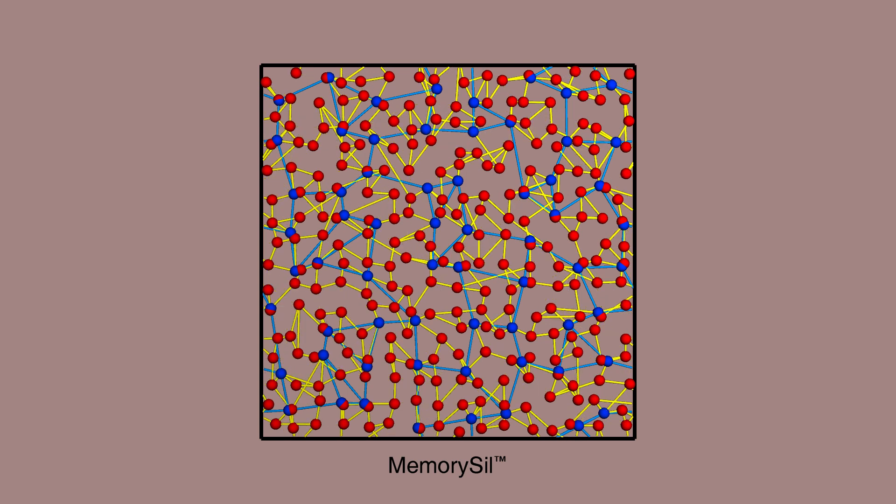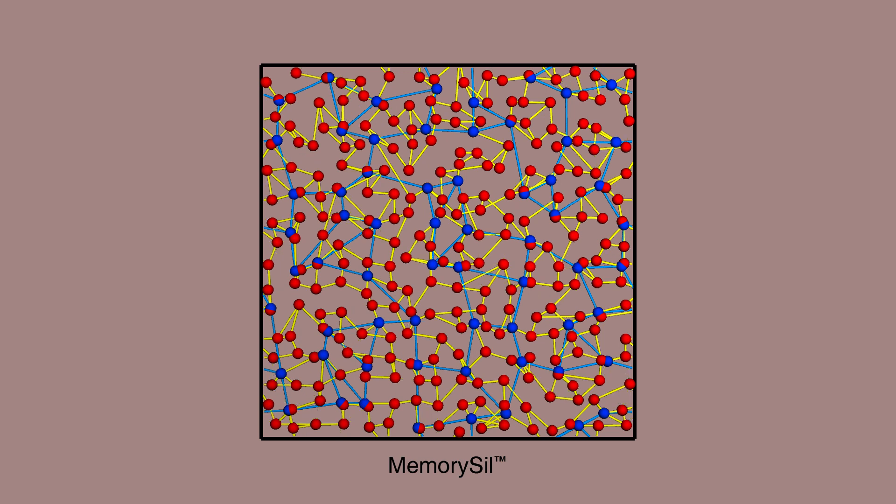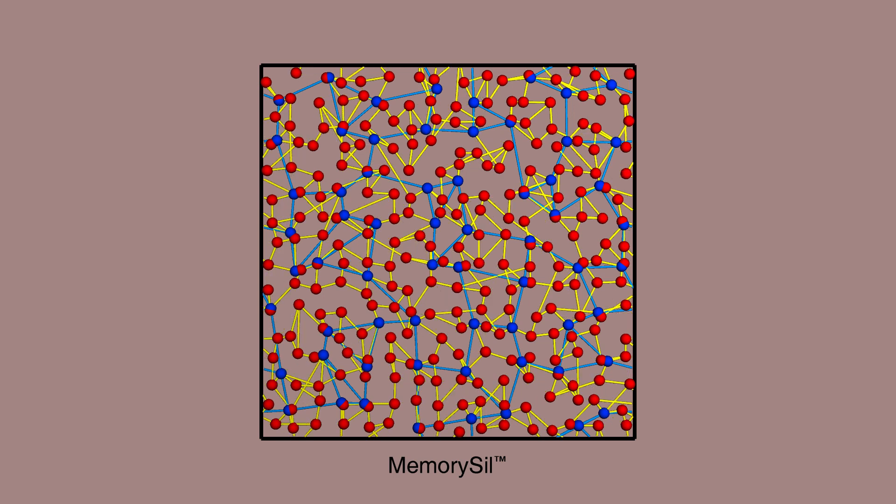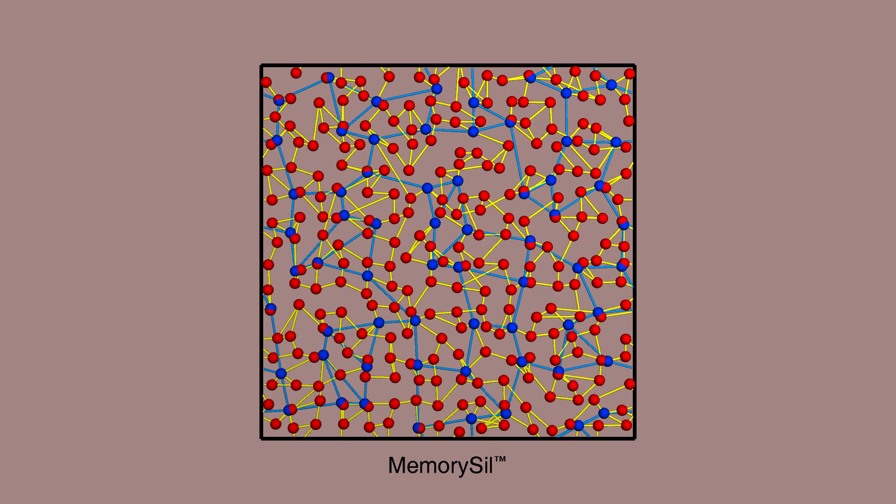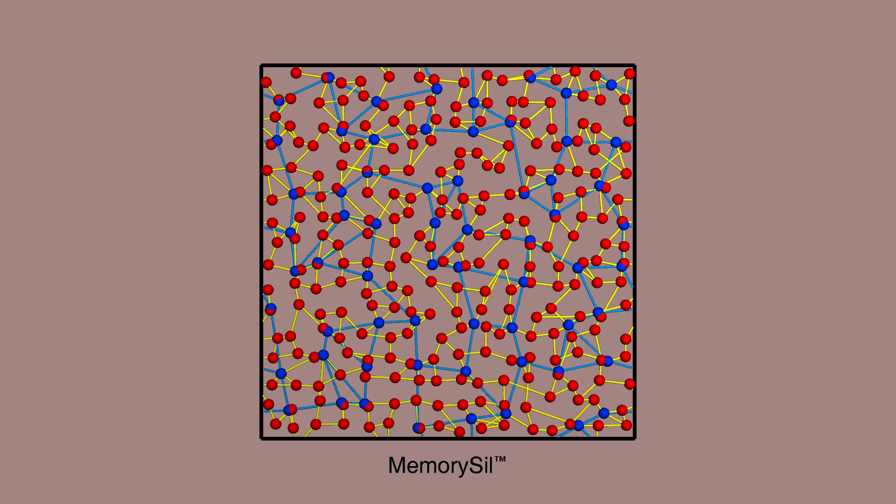When you deform memory sill, those two parts behave quite differently. The structure of memory sill's permanent network determines its preferred shape, so that permanent network acts as a network solid. Memory sill's current shape determines the structure of its temporary network, so that temporary network acts as a network liquid.